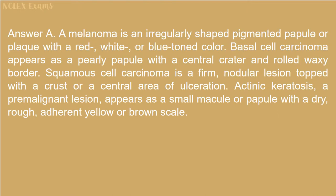Answer A. A melanoma is an irregularly shaped pigmented papule or plaque with a red, white, or blue-toned color. A basal cell carcinoma appears as a pearly papule with a central crater and rolled waxy border. A squamous cell carcinoma is a firm, nodular lesion topped with a crust or a central area of ulceration. Actinic keratosis, a pre-malignant lesion, appears as a small macular papule with a dry, rough, adherent yellow or brown scale.